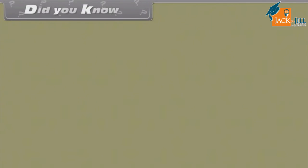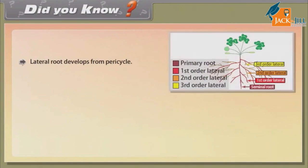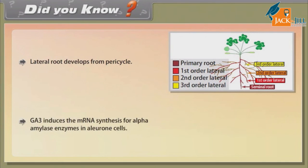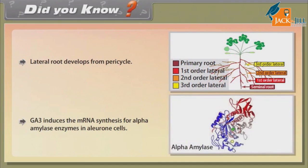Did you know: Lateral root develops from pericycle. GA3 induces the mRNA synthesis for alpha-amylase enzymes in aleurone cells.